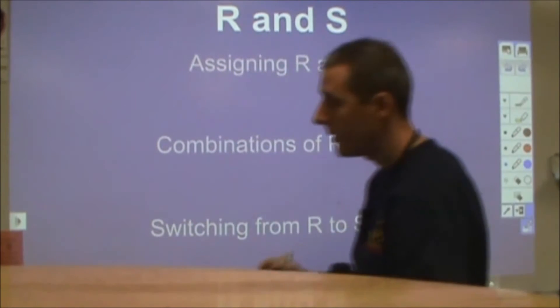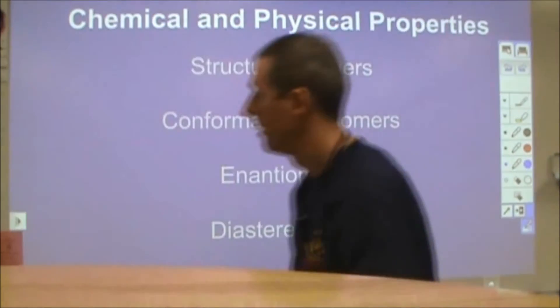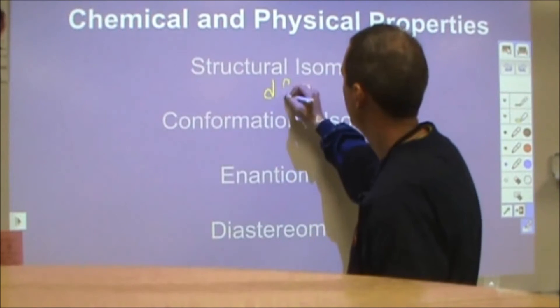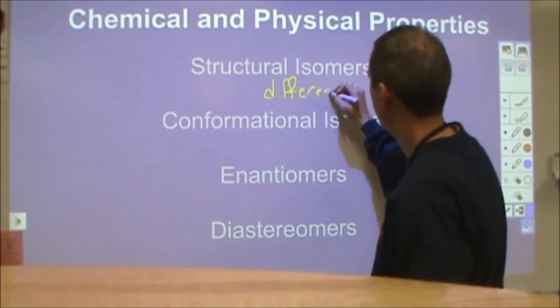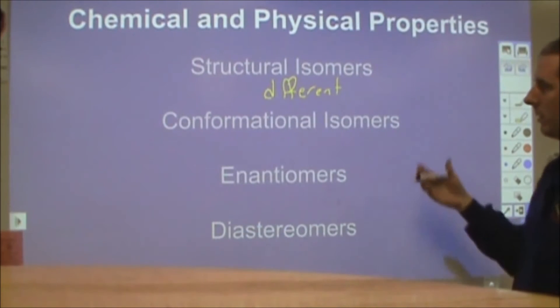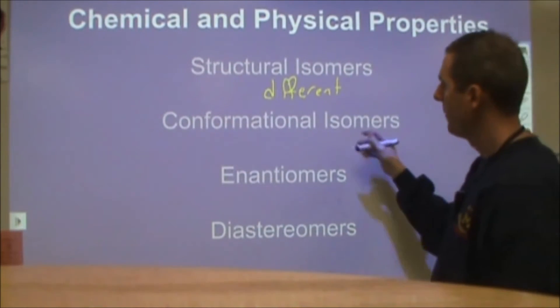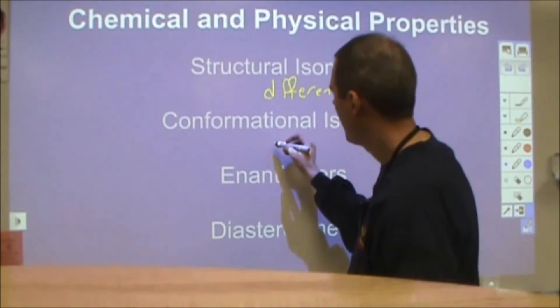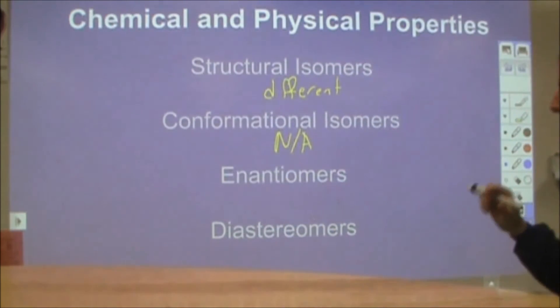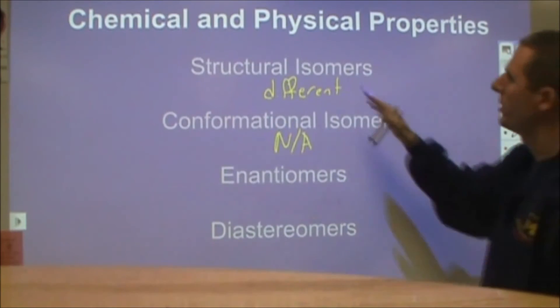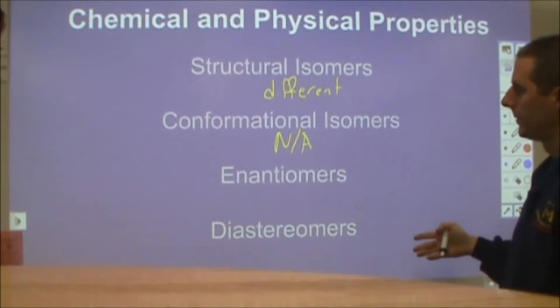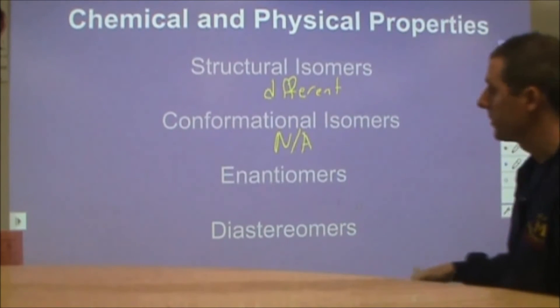So given that, structural isomers have different physical and chemical properties. They're actually different chemicals. Those are boiling points, melting points, reactivities, and everything about them will be different. Conformational isomers, this really does not apply because usually conformational isomers we're looking at two specific molecules and usually when we're talking about chemical and physical properties we're looking at the bulk of a large amount of chemical.